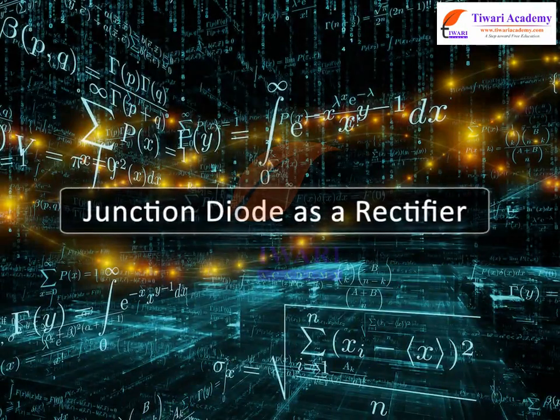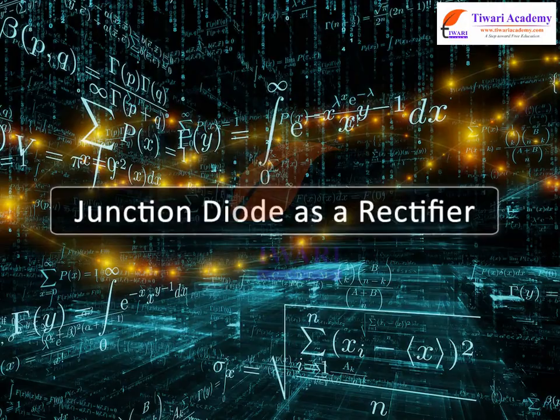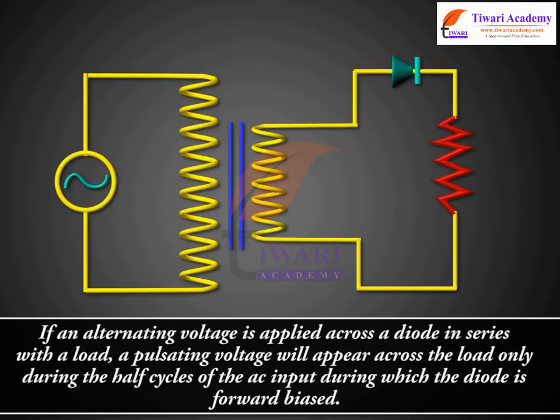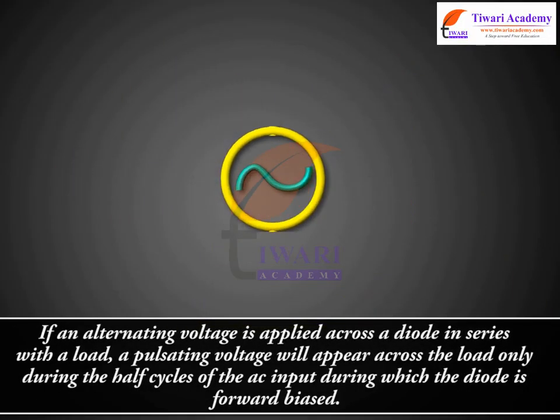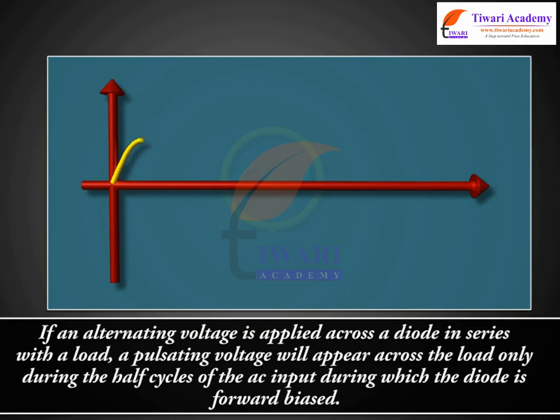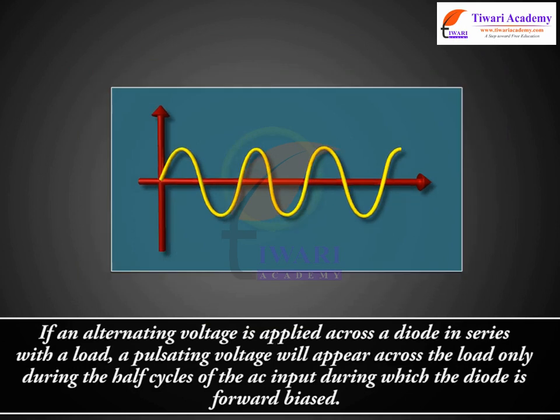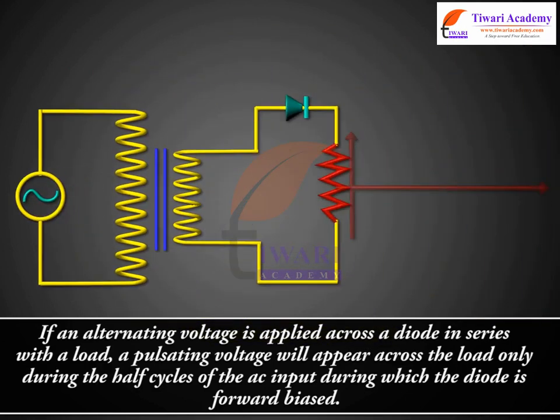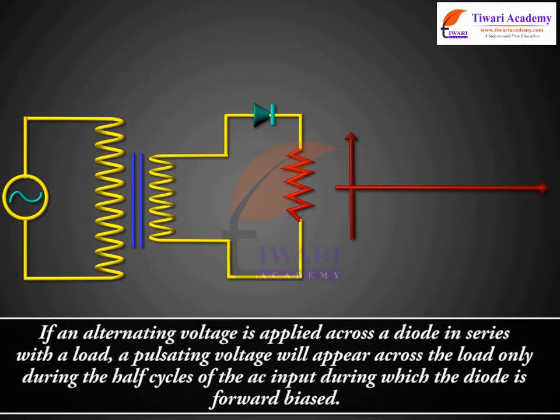Junction diode as a rectifier. If an alternating voltage is applied across a diode in series with a load, a pulsating voltage will appear across the load only during the half cycles of the AC input during which the diode is forward biased.